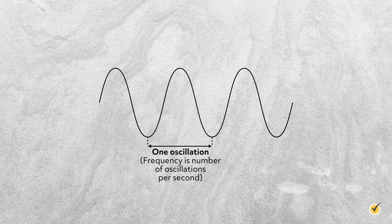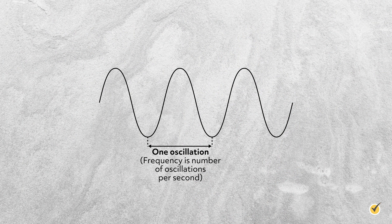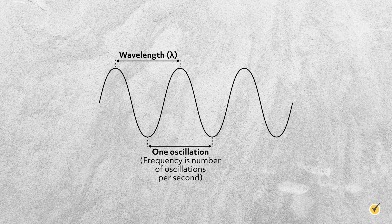The wave properties of light include its frequency, wavelength, and amplitude. The frequency can be thought of as the number of oscillations per second, or the number of crests or troughs that pass a certain point per second. The wavelength is the distance from trough to trough, or crest to crest, of the wave.